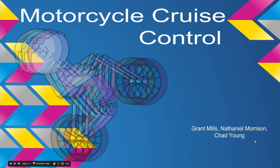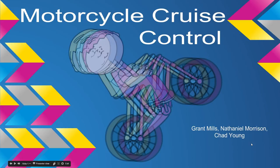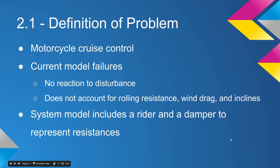Hello there, our problem is motorcycle cruise control. I'm Nathaniel Morrison along with Grant Mills and Chad Young. Our problem definition comes from current motorcycle cruise controls, known as throttle locks, which is really just a bar that moves over the throttle to hold it in place.